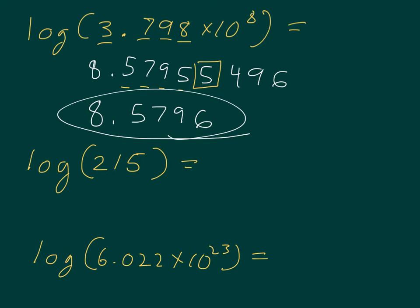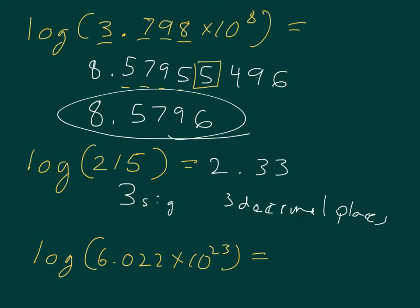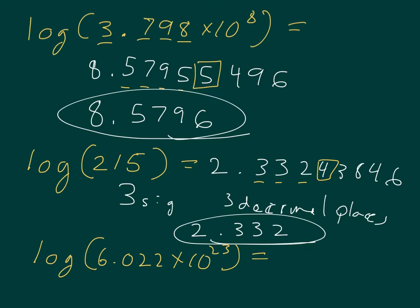Down here we have the log of 215. We have 3 sig figs, so we should have 3 decimal places. Log 215 gives a calculator lie of 2.33243846. Three decimal places — 1, 2, 3 — round on the basis of the 4, and that gives us 2.332 as our answer.